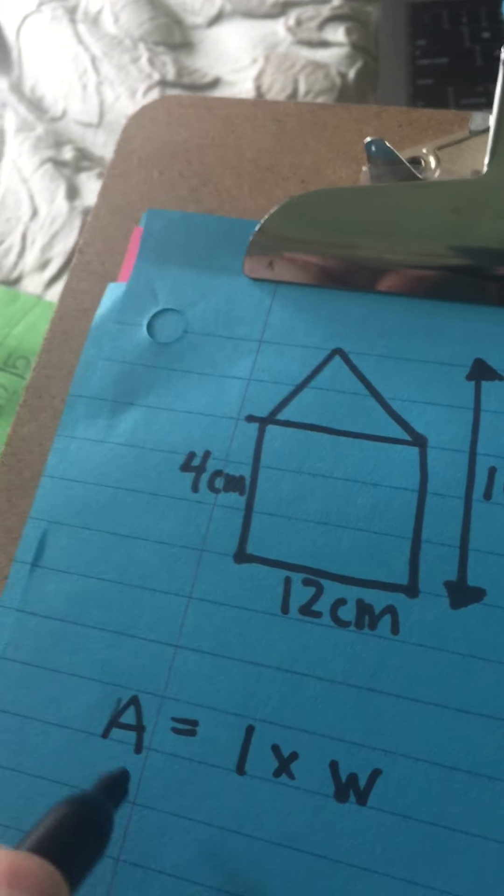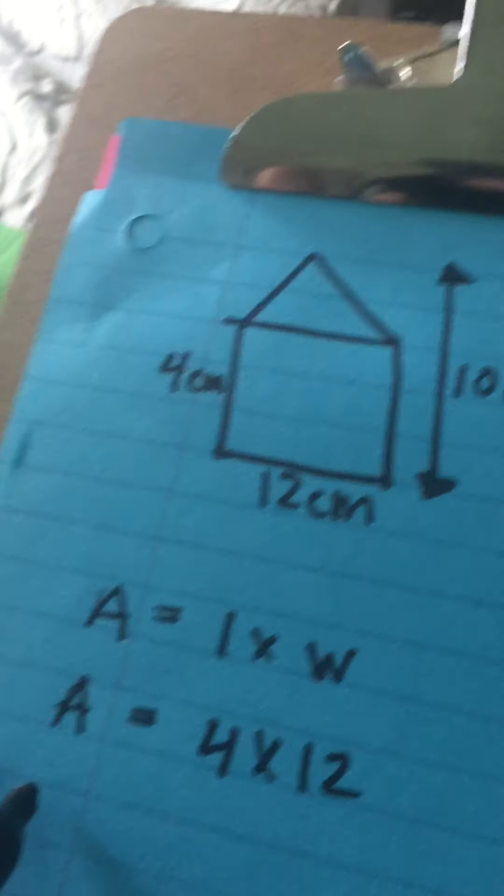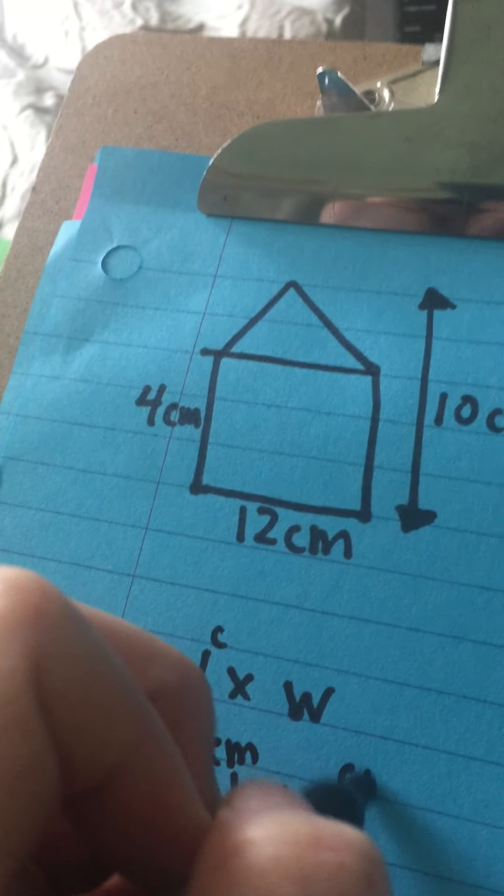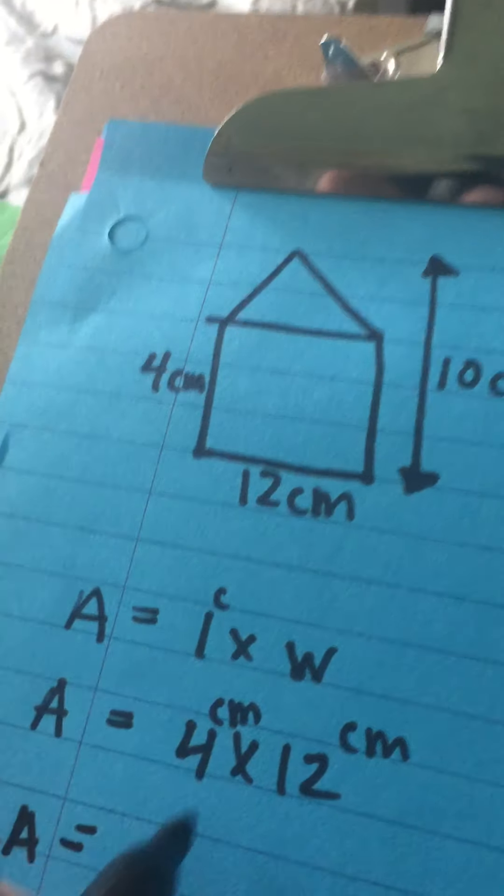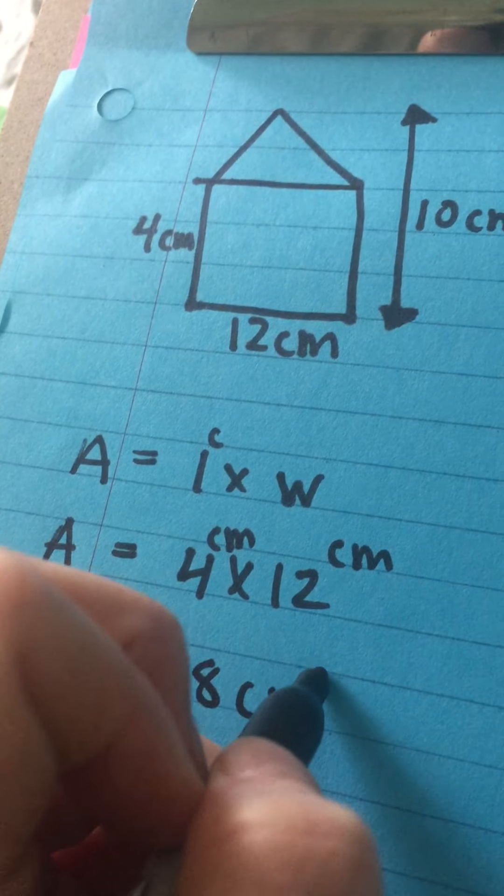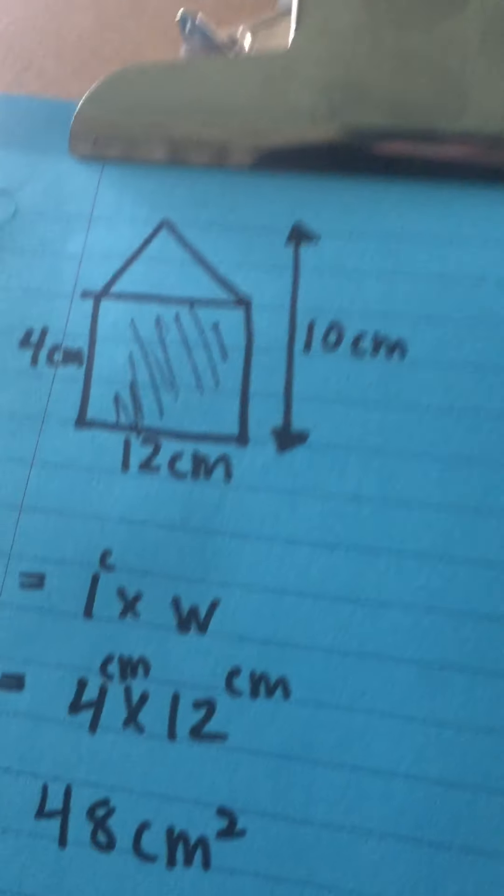Let's do area equals 4 cm times 12 cm. We should have centimeters on here. Area equals 48 centimeters squared. Okay, so we already found the area of this, that was easy.